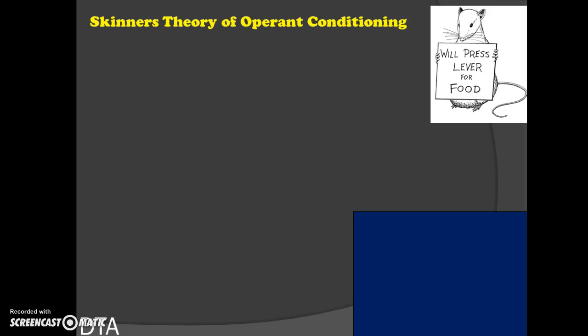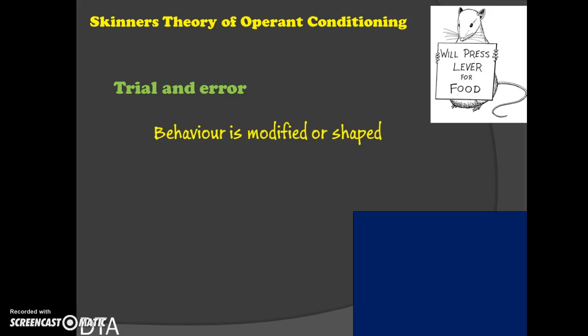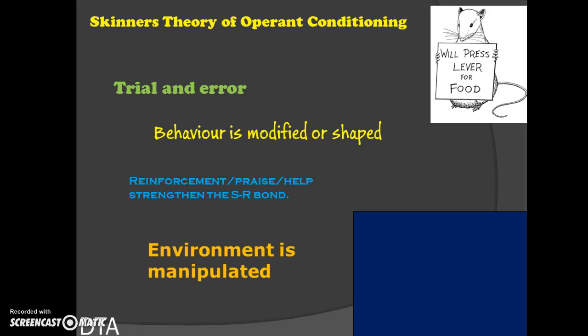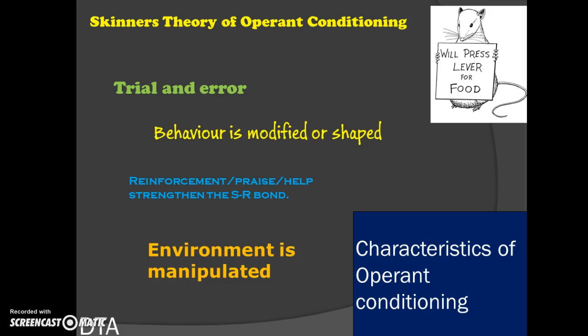Skinner's theory of operant conditioning — those that did psychology will recognize the rat in the corner. Basically it's talking about trial and error. When we're learning a new skill, what we're trying to do is modify or shape the behavior that's going to suit our outcomes. That is reinforced by praise, which helps to stimulate and strengthen the stimulus-response bond. The environment is usually manipulated, so you're just thinking about a practice that's going to get the outcome that you want. These are the main characteristics of operant conditioning.